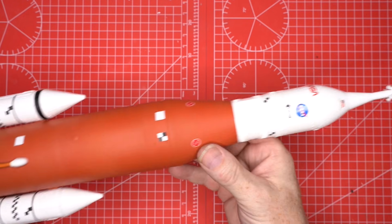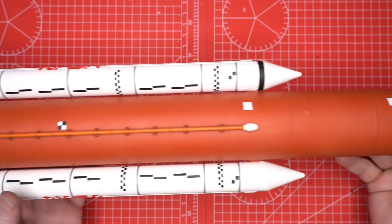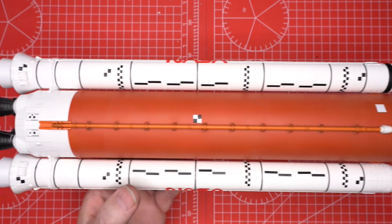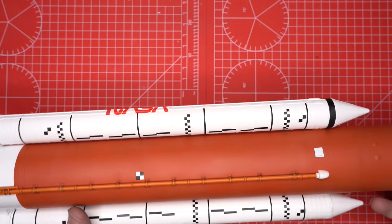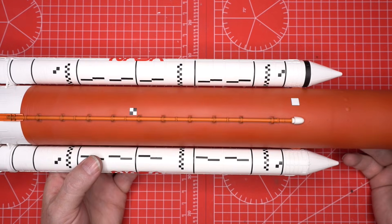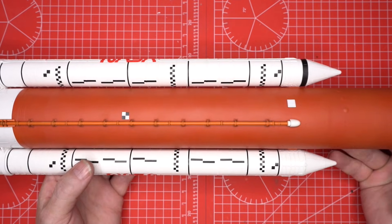That's the full build of the Airfix SLS Artemis gift set, from the core tank to the boosters and payload module. If you've followed along, you should now have a detailed, realistic Artemis rocket ready for display. Thank you very much for watching, and don't forget to like and subscribe. We'll see you next time.